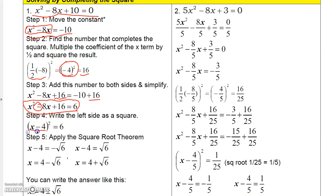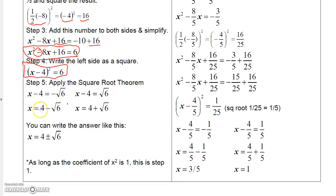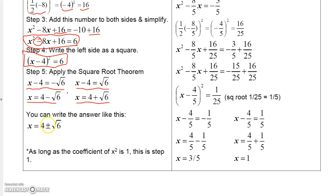Now, if you remember the square root theorem, this is the form we want. We break the equation up into x minus 4 equals negative the square root of 6, and x minus 4 equals positive the square root of 6. Adding 4 to each side gives us 4 minus the square root of 6 and 4 plus the square root of 6, or simply 4 plus or minus the square root of 6.